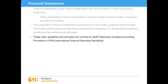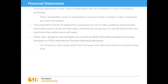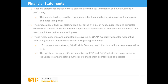These rules, guidelines, and principles are covered by GAAP, Generally Accepted Accounting Principles, or IFRS, International Financial Reporting Standards. U.S. companies report using GAAP, while European and other international companies follow IFRS. Though there are some differences between IFRS and GAAP, efforts are being made by various standard-setting authorities to make them as integrated as possible so that comparison of companies across geographies becomes more meaningful.